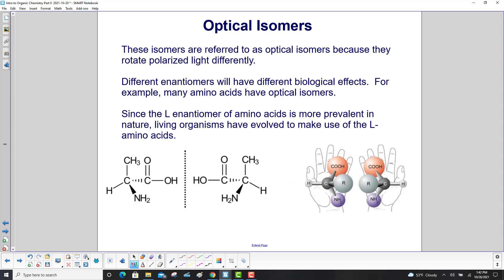These isomers are referred to as optical isomers because they rotate polarized light differently. Different enantiomers will have different biological effects.